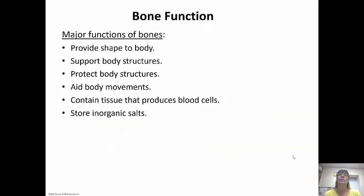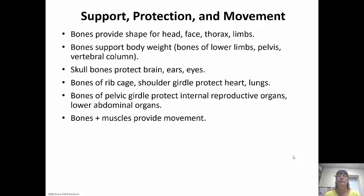The major functions of bones include providing shape to the body, supporting and protecting structures, and helping body movements by providing attachment points for muscles. Bones provide shape for our head, face, thorax, and limbs, and support body weight — especially the lower limbs, pelvis, and vertebral column. Skull bones protect the brain, eyes, and ears. The rib cage protects the heart and lungs. The pelvic girdle protects internal reproductive organs and lower abdominal organs.